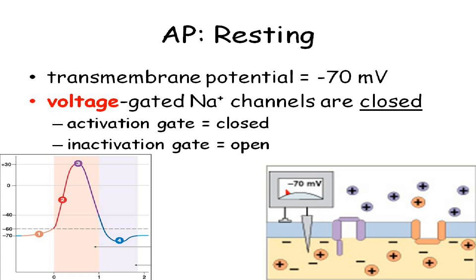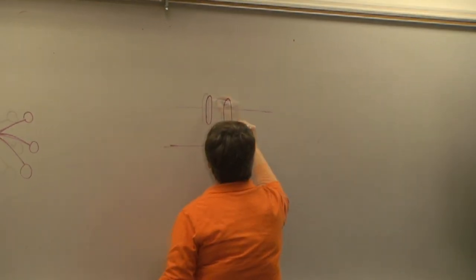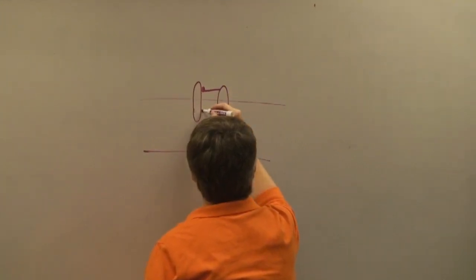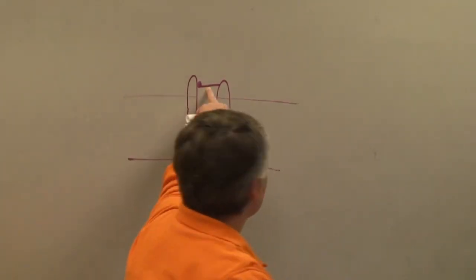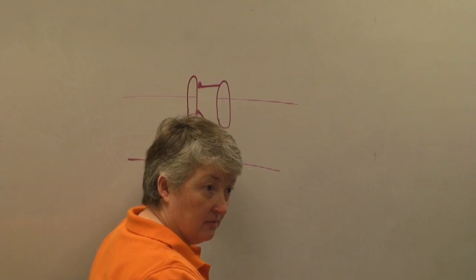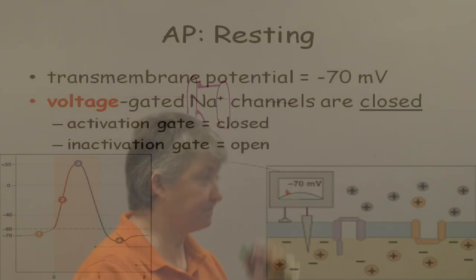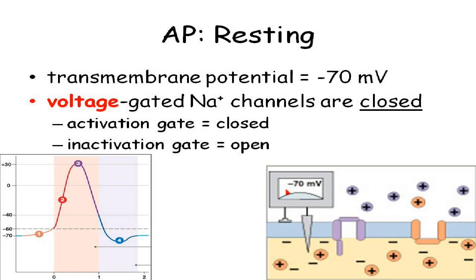At the beginning of the axon, the resting membrane potential is about minus 70. The voltage-gated sodium channels are closed. Remember, your voltage-gated sodium channels have two doors. This would be a section along the axon. Voltage-gated sodium: front door is closed, back door is open — the activation gate and the inactivation gate.